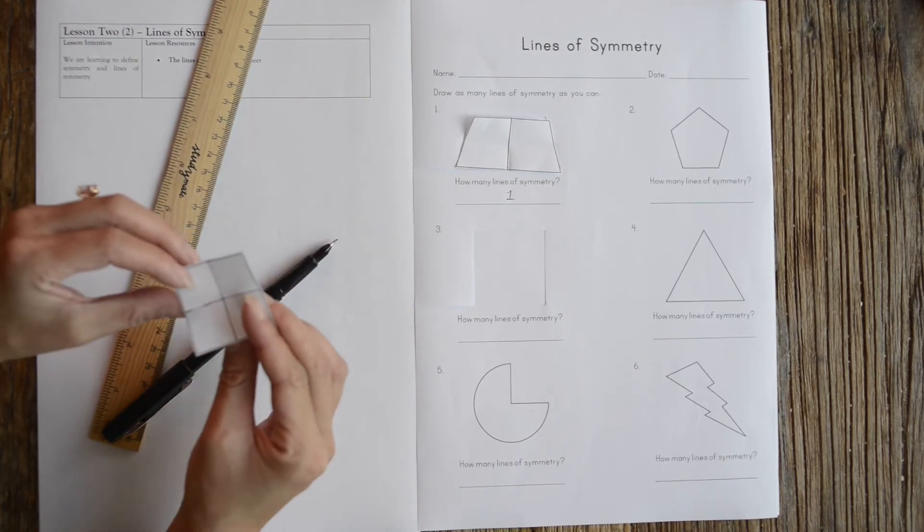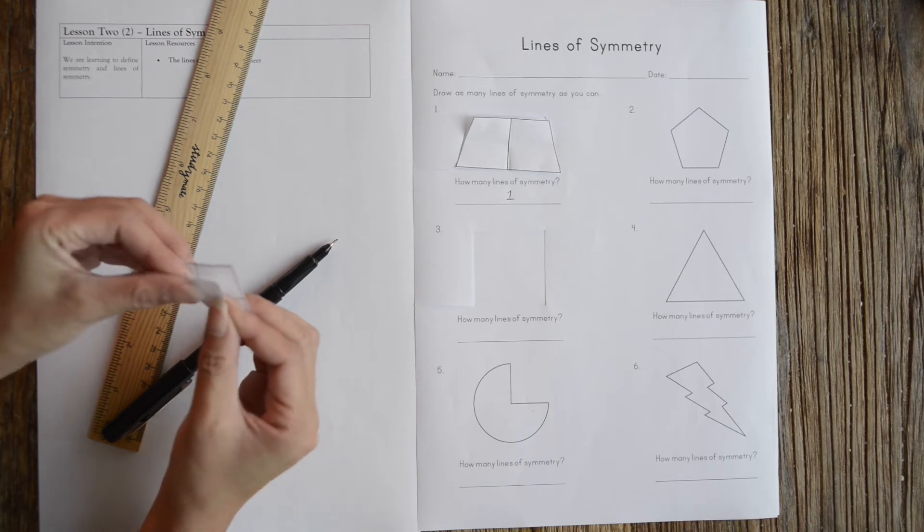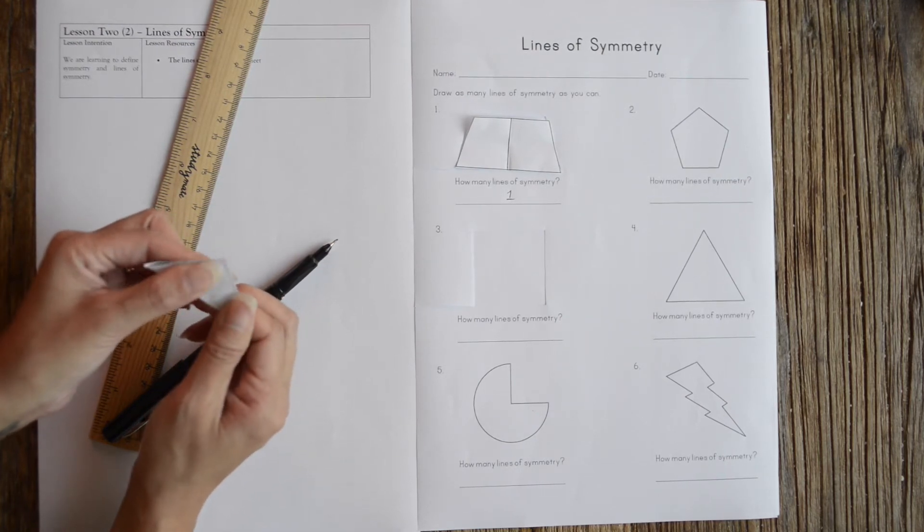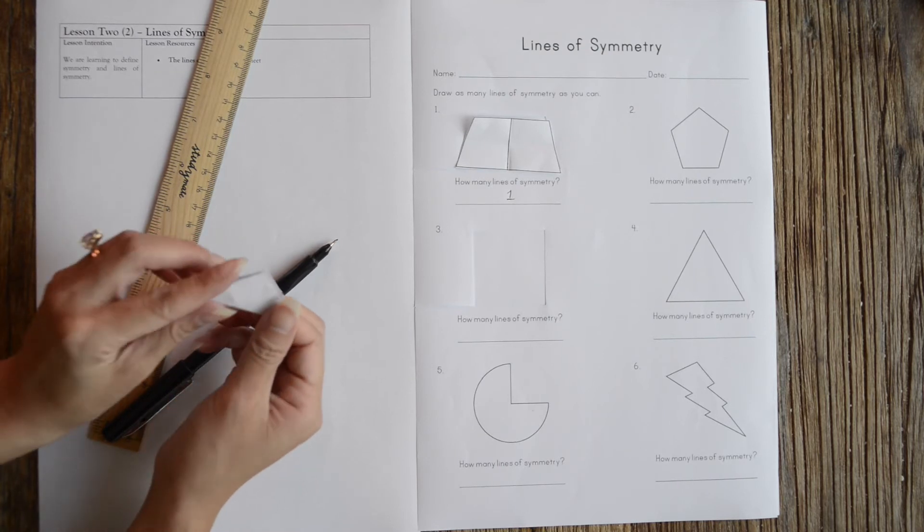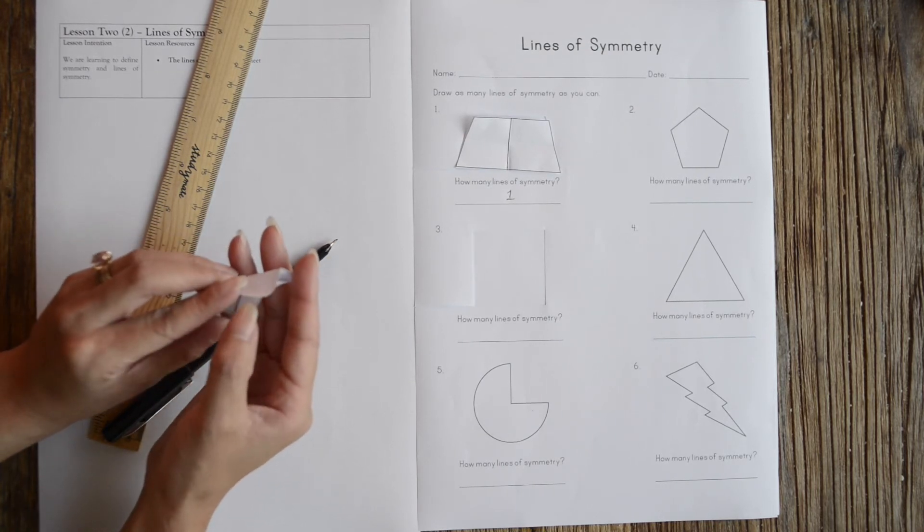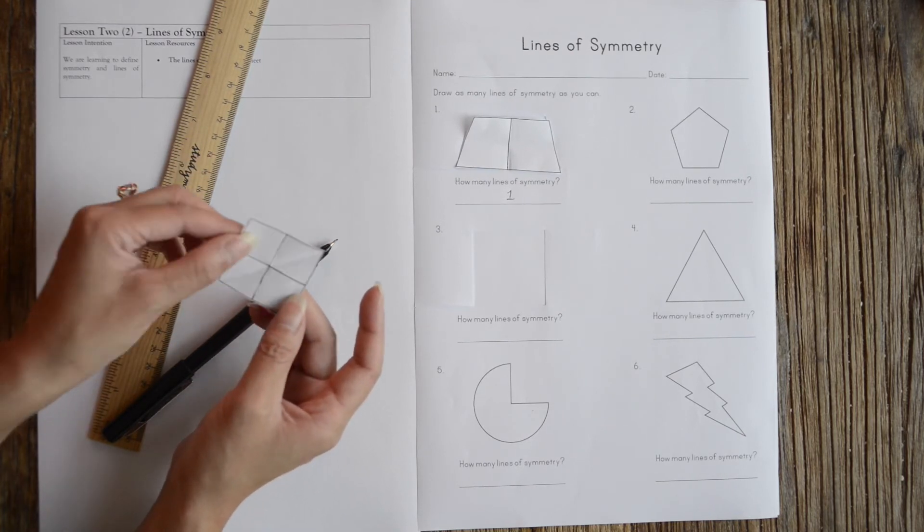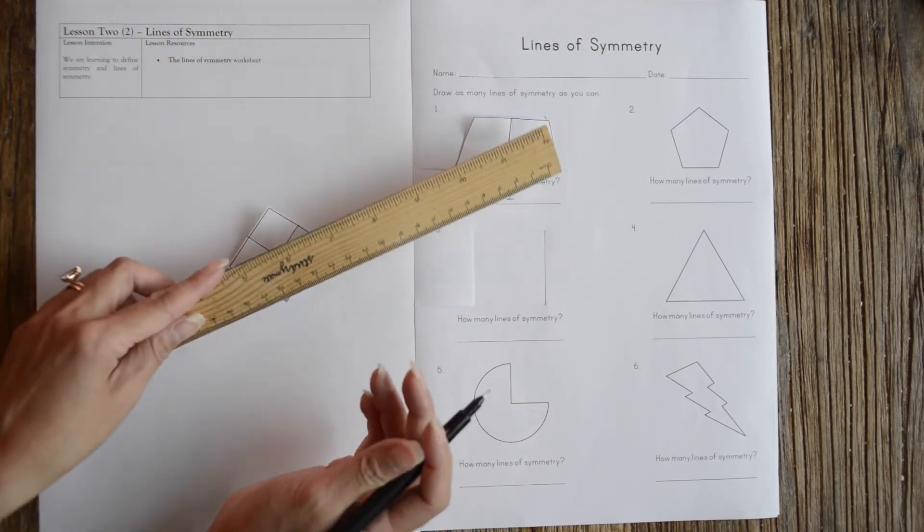Now I wonder if I can fold it up this way to make a triangle. And I think that also creates a mirror image—two triangles that are a mirror image of each other. So I've got a third line of symmetry.